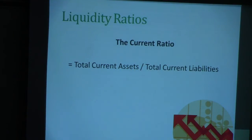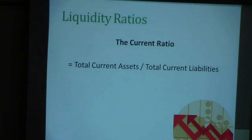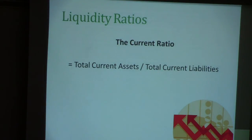The second liquidity ratio is the current ratio, which is a true ratio. You take the current assets and divide by the current liabilities. If the number is more than one, that means you have more current assets than current liabilities, which is a positive sign.